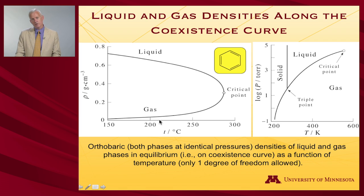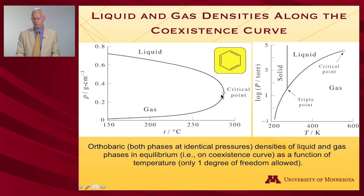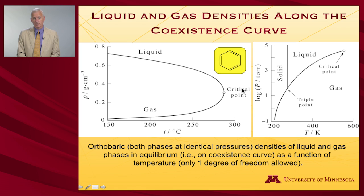As temperature continues to increase, the gas becomes more dense, occupying less volume as pressure compresses it. The liquid becomes less dense and expands. The two densities approach one another until you hit the critical temperature, at which they coalesce and become identical. Any temperature increase beyond that gives a single density characteristic of that temperature and pressure—you don't see two phases in equilibrium. You have a supercritical fluid with two degrees of freedom: temperature and pressure.